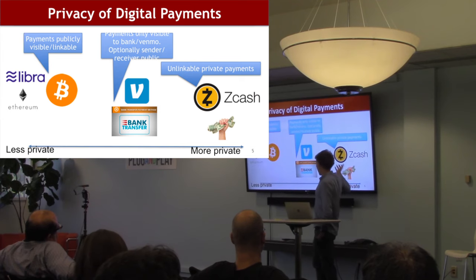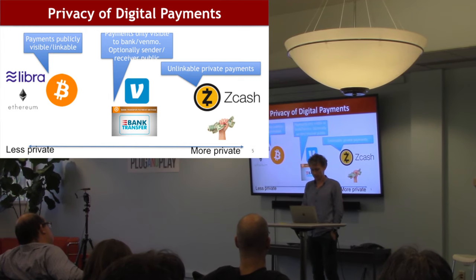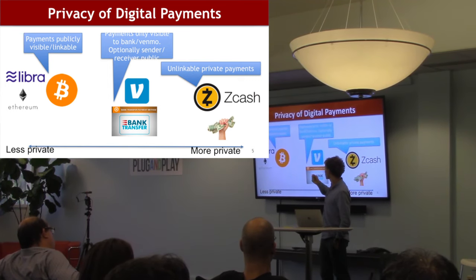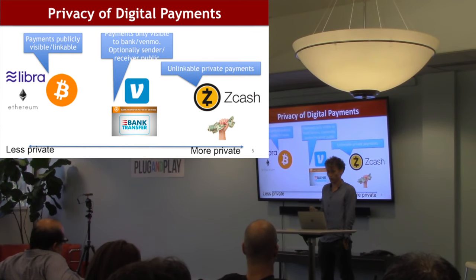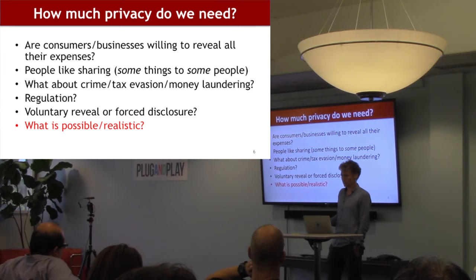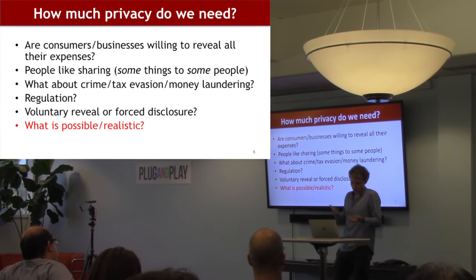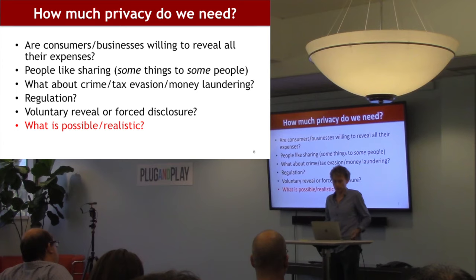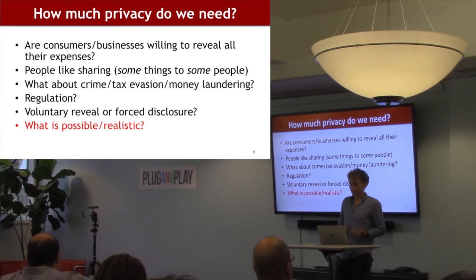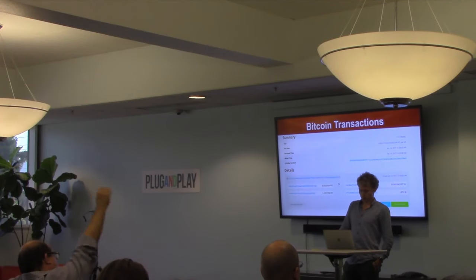On the other side of the spectrum you have cash, which is going away, and you have cryptographic solutions like Zcash. But the real question is: do we want a digital payments future where our digital payments are worse in terms of privacy than what we currently have? This leads to the question of how much privacy we need — a complex question with trade-offs. There are questions about crime, tax evasion, money laundering, and regulation. The question I want to focus on is: what is possible and realistic? It turns out that technically a lot is possible and practically feasible.